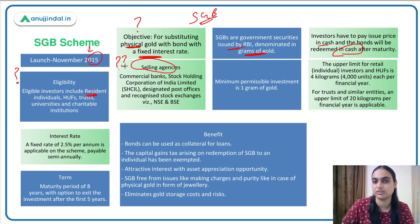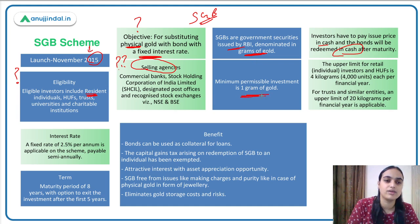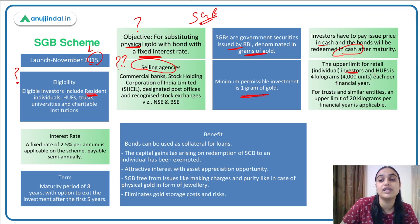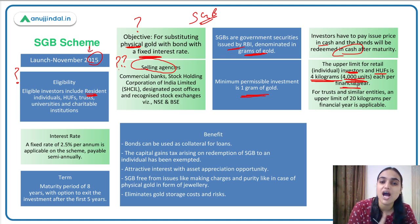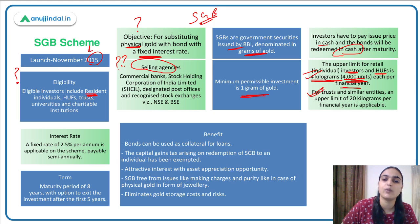On investment limits: the minimum investment required is at least one gram of gold. There is also an upper limit which differs by investor type. For individuals and Hindu Undivided Families, the maximum is 4 kilograms — that is 4,000 units — per financial year. For trusts and similar entities, the maximum limit is 20 kilograms of gold.